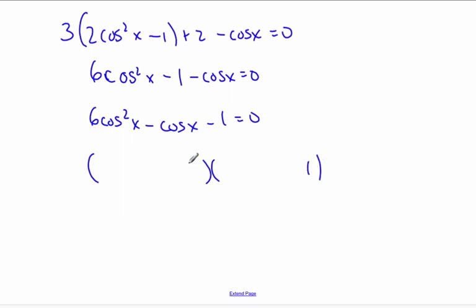I know this is going to be a 1 and 1, and probably a 2 cosine x and a 3 cosine x. And this one here will be negative, positive, equal to 0.